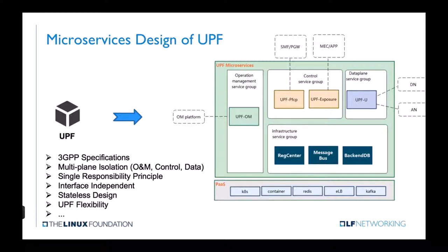The blue box indicates UPF-U, which is responsible for data plane communication and represents the N3 interface. We separate UPF according to the following principles: firstly, the 3GPP specification — we cannot change the functionality and protocols of UPF. Secondly, we should obey the multi-plane isolation principle. The micro-service design should follow single responsibility and interface independence principles. Most cloud-native applications are stateless, so we try to separate the data and business logic.